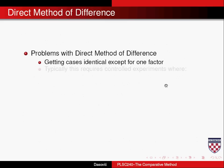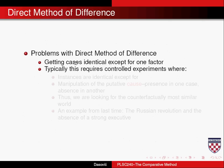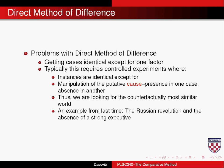Some problems with the direct method of difference: getting cases identical except for one factor is very difficult. We would need to know all factors that could possibly lead to revolt and their values in each region. In the social sciences, theories are often not well developed and are more hypothetical than real. Getting cases identical except for one factor typically requires controlled experiments where we can manipulate the putative cause — making it present in one case and absent in another — and often we can't do that. So we're looking for what's called the most similar world. I hope that helps someone understand the comparative method.